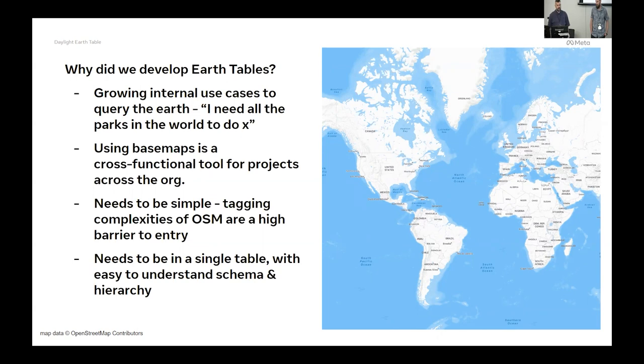We had a lot of internal use cases at META, developers and engineers who wanted to use OpenStreetMap data that we use a lot with Daylight, and wanted to get all the parks in the world from OSM. But if you work with OSM tagging, it's a high barrier to entry there. Getting all the parks could be rather complicated. You'd have to know a bunch of different tagging methodologies and map them differently in different parts of the world.